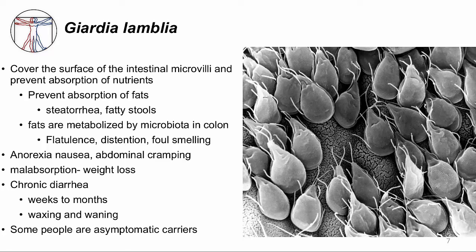Unabsorbed nutrients create an osmotic gradient that pulls water in. Unabsorbed fat leads to fatty stools, or steatorrhea. The unabsorbed fat in the colon gets metabolized by the colonic microbiota, making foul-smelling gas and abdominal distension. So now you know why these patients have really foul-smelling flatulence, bad abdominal cramping, and distension. They are nauseous and don't feel like eating, and over time, the malabsorption can cause weight loss.